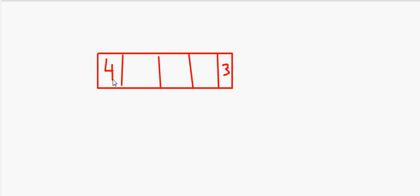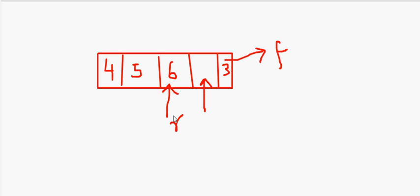This is basically the logic behind insertion in a circular queue, where we don't leave any space unutilized. As another example, suppose you have elements 3, 4, 5, 6 in the queue. There is one free space here. This is your front and this is your rear. You have a space at this place, so you can do rear is equal to rear plus 1 in this case. We will be taking up the proper algorithm and then the program for this circular queue insertion.